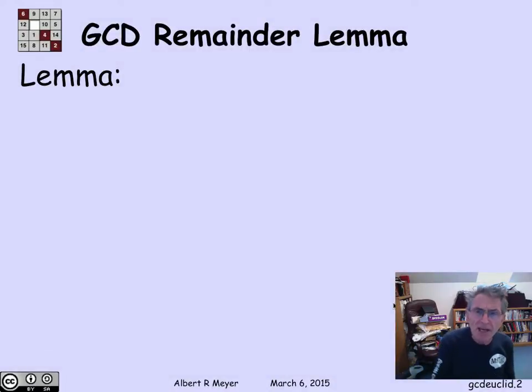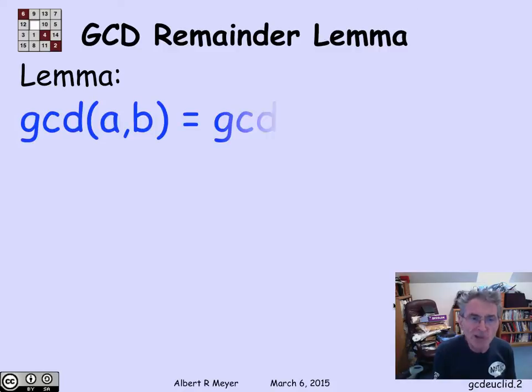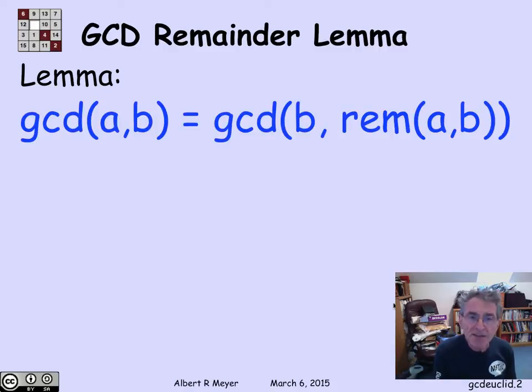The Euclidean algorithm is based on the following lemma, which we'll call the remainder lemma. It says that if a and b are two integers, then the greatest common divisor of a and b is the same as the greatest common divisor of b and the remainder of a divided by b, providing b is not 0, because otherwise you can't divide by b.